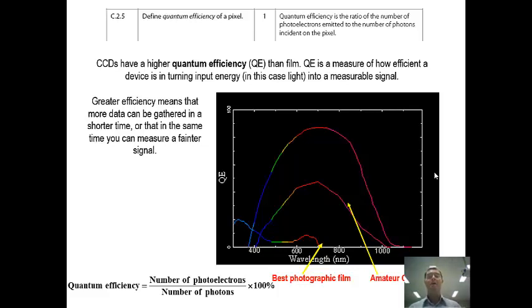So quantum efficiency is about how much information can be collected relative to how much light energy comes in the first place. As we can see here, if we look at the table here, the quantum efficiency on a good professional CCD is much, much higher than what we find with a photographic film or an amateur CCD. And this quantum efficiency tells us the ratio between the number of photoelectrons divided by the number of photons times 100. So it's basically giving us some idea about how many electrons are produced for each photon which is coming down.